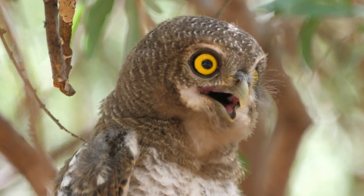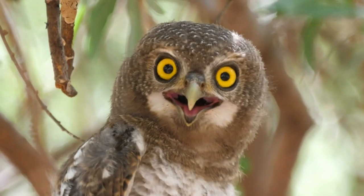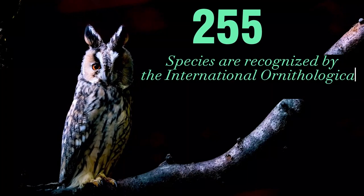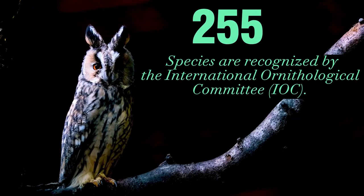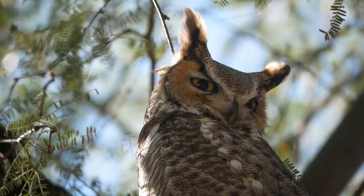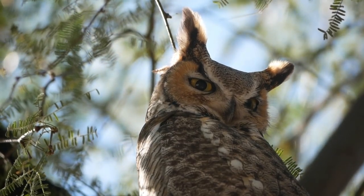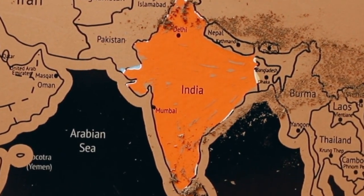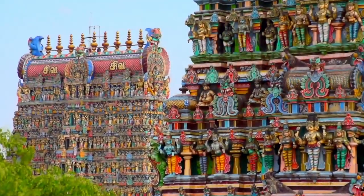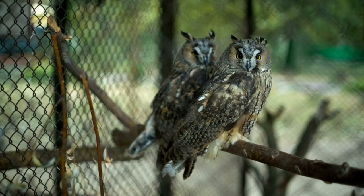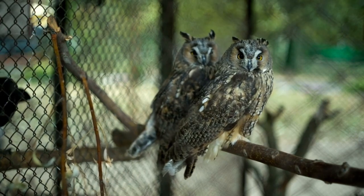Did you know that there are about 255 recognized species of owls around the world? Out of these 255 species, 36 species of owls are found all over India. Among these 36 species, some are migratory and most are native to India.